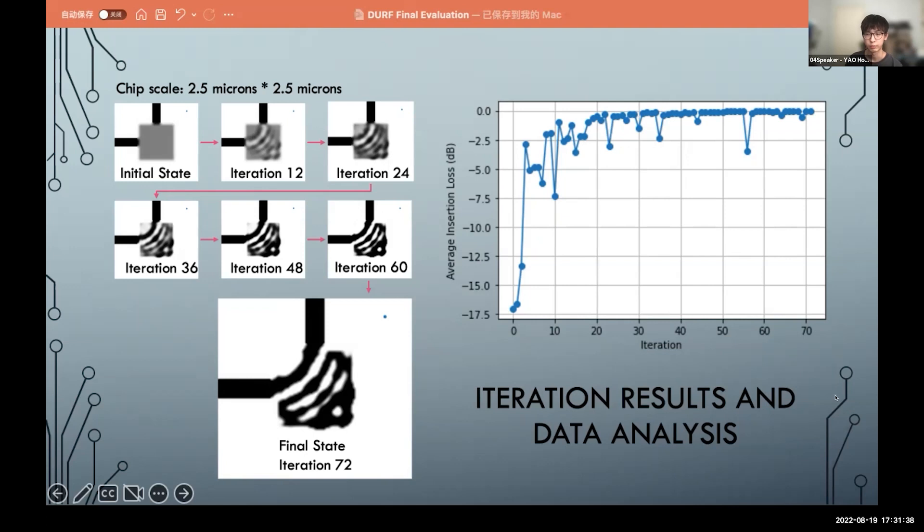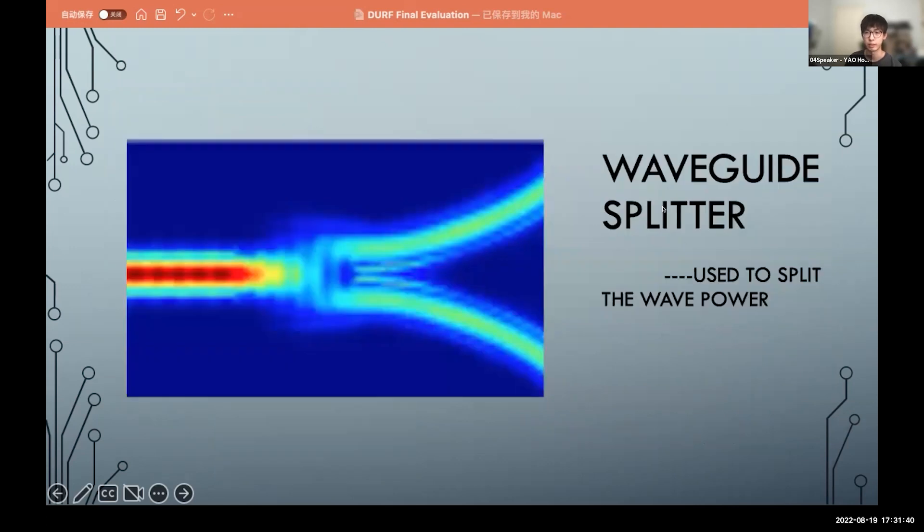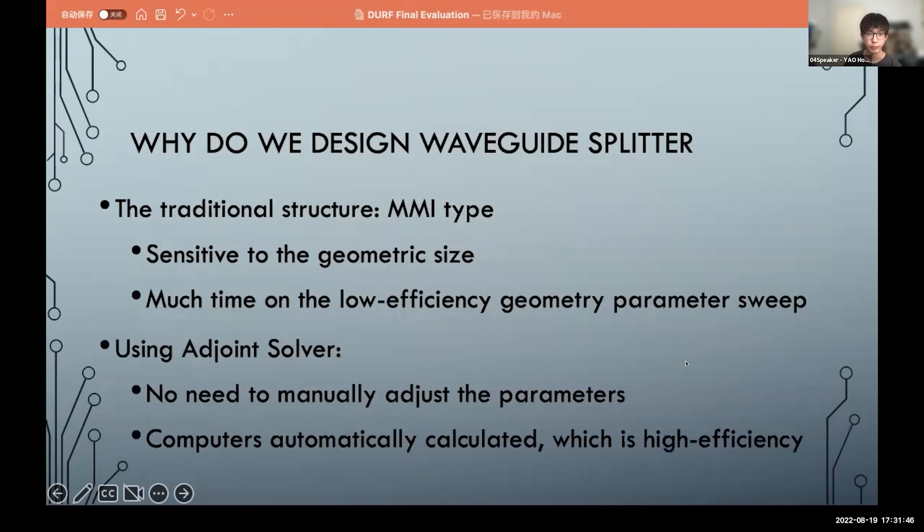And the second is the waveguide splitter, which is used to split the waveguide power from one into two. And why do we need to design the waveguide splitter? Because the traditional structure using the MMI type is sensitive to the geometric side and there's no efficiency. But when we're using the adjoint solver, it is high efficiency because the computer automatically calculates it and we don't need to manually adjust the parameters.